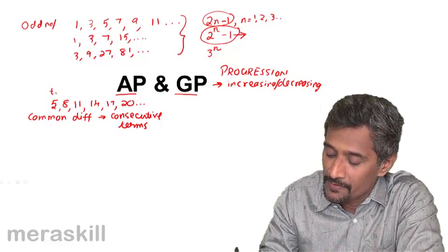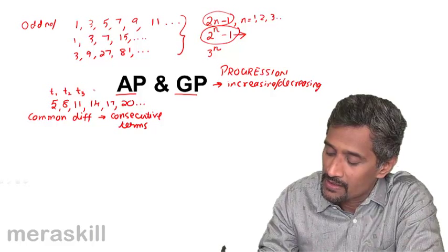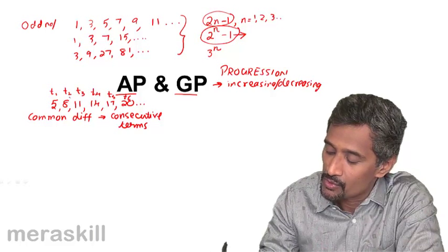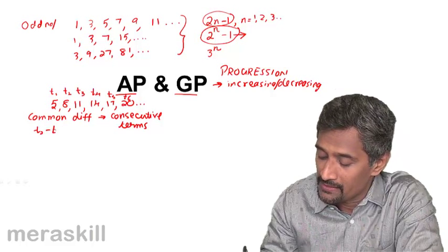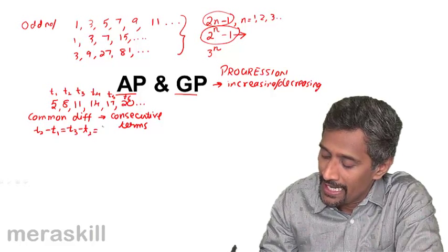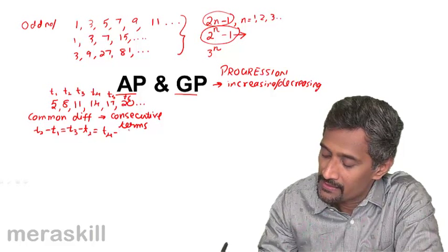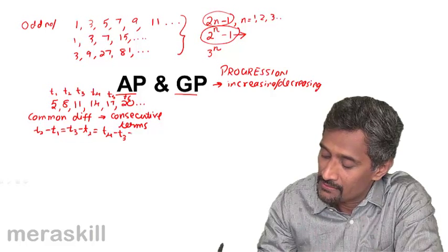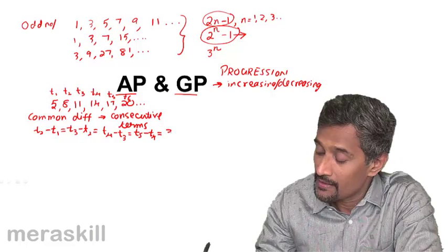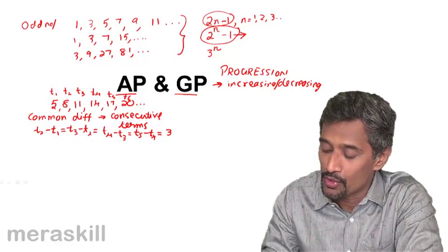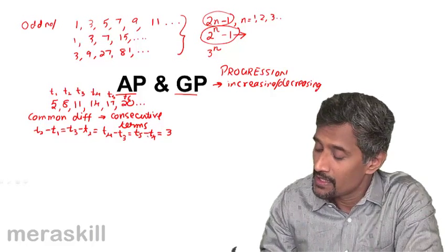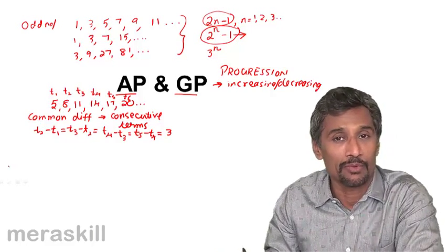Say you call this as first term, second term, third term, fourth term, fifth term, sixth term, and so on and so forth. If you see t2 minus t1, as well as t3 minus t2, as well as t4 minus t3, as well as t5 minus t4, all these are 3. The difference between any two consecutive terms, the second term minus the previous term, is a constant. So we call it as an arithmetic progression.